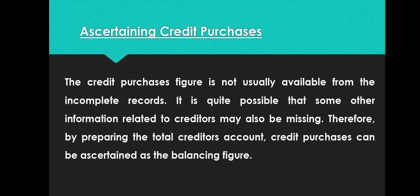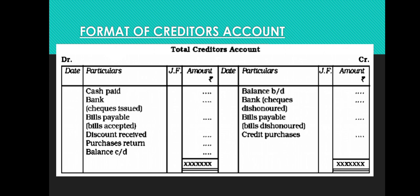First: ascertainment of credit purchases. The credit purchase figure is not usually available from incomplete records since only cash transactions are maintained. By preparing the total creditors account, credit purchases can be ascertained as the balancing figure. We record all available information in the creditors account and find the missing amount.